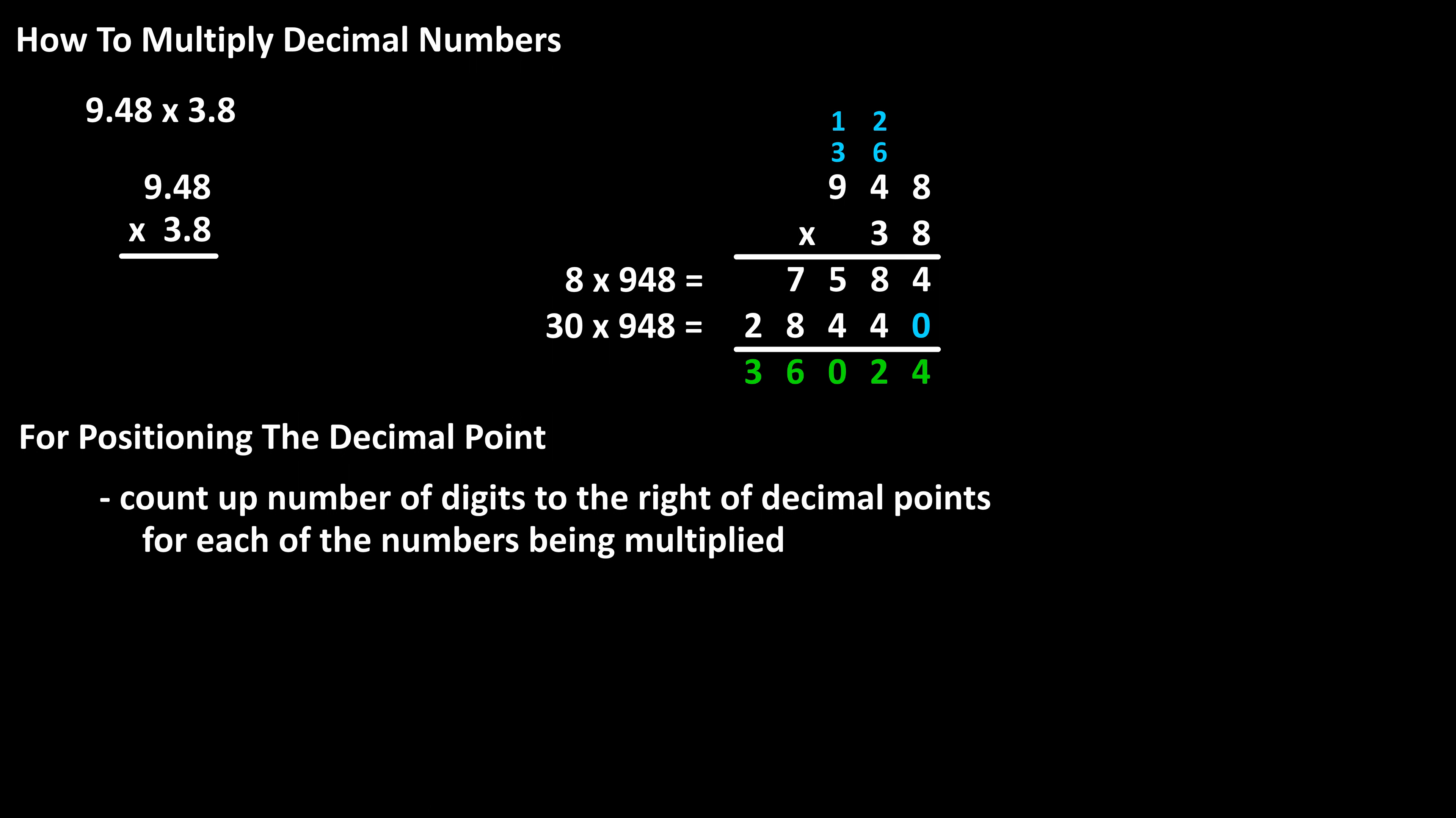First, we count the number of digits to the right of the decimal point in each of the numbers being multiplied. So two digits in 9.48 and one digit in 3.8.